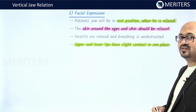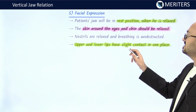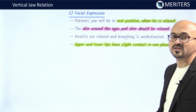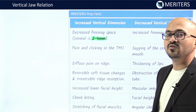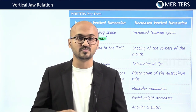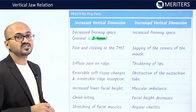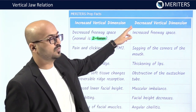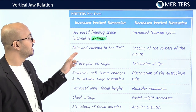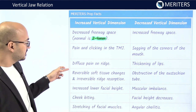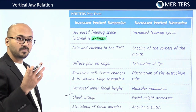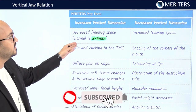For facial expressions: the patient's jaw is in rest position when relaxed, the skin around the eyes and chin is relaxed, nostrils are relaxed and breathing is unobstructed, and upper and lower lips have slight contact in one plane. These features help determine VDR. Signs of increased vertical dimension include decreased freeway space, dentures clicking against each other, pain and clicking in the TMJ, diffuse pain on the ridge, ridge resorption, increased lower facial height, increased cheek biting, and stretching of facial muscles.